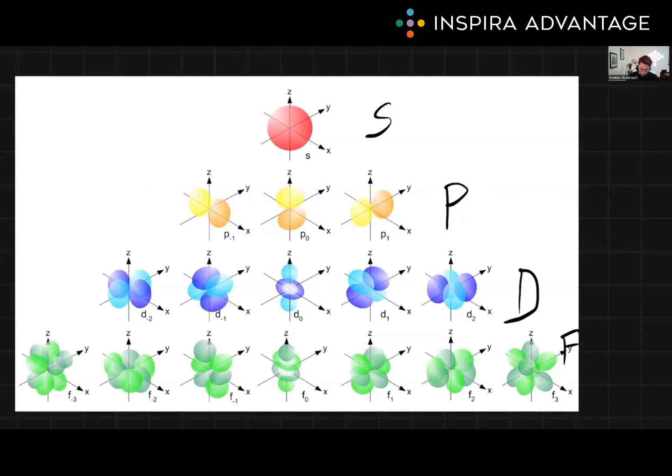And then our D orbitals are a more complex shape where we've got a bunch of different ones we can have here with four lobes and five different orientations in space. And the F orbitals, you don't need to know what they look like for the MCAT. You just need to know they exist, and they're even more complex than the D orbitals.